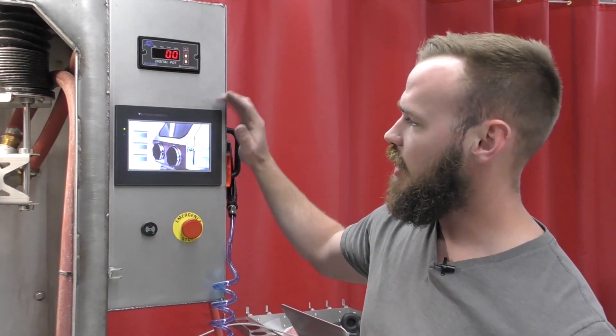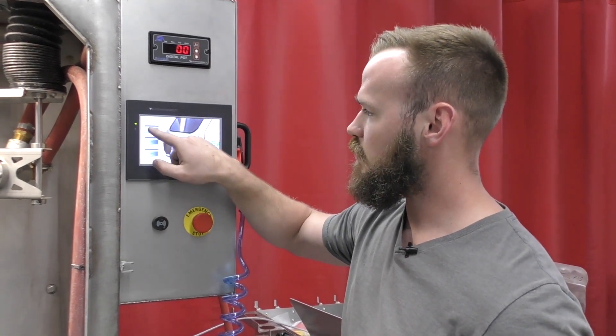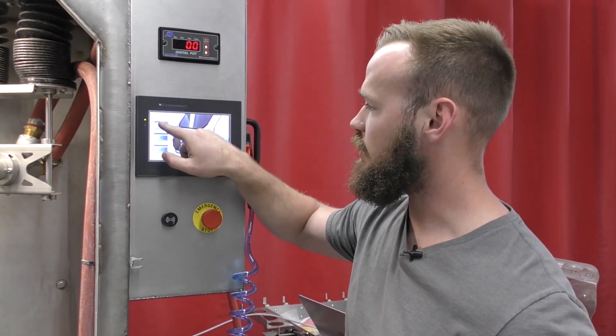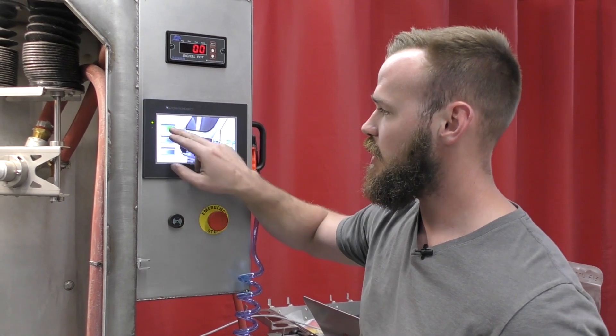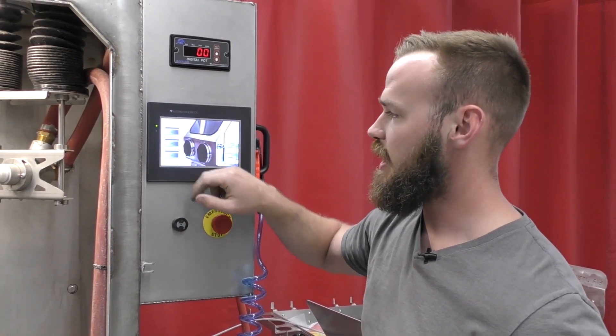So say, if I'm using a heavier media like 20 to 70 mesh, I would just click the 20 to 70 mesh button. Same thing for 70 to 170 mesh. That's kind of a mid grade. It's not super light. It's not super heavy.